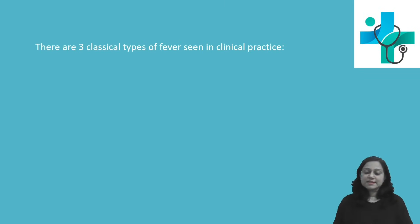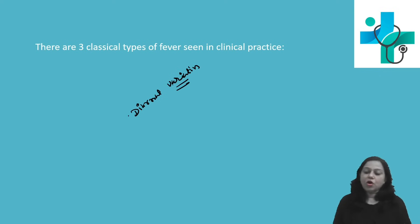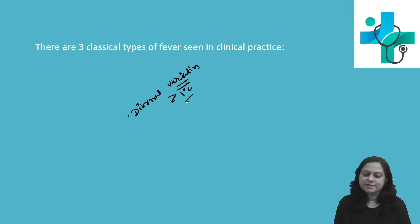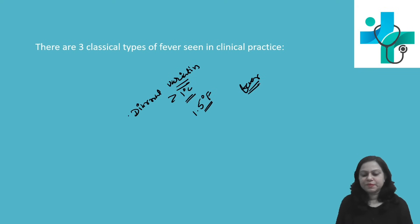Let us discuss some important aspects related to fever. An increase in diurnal variation of body temperature of more than 1 degree Celsius, or 1.5 degree Fahrenheit, or a rise of body temperature above the maximum normal body temperature is called fever.